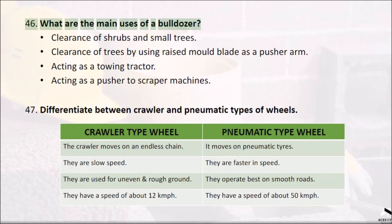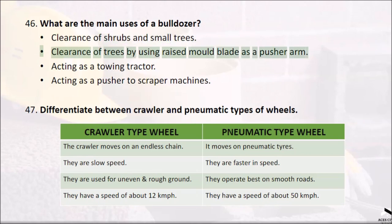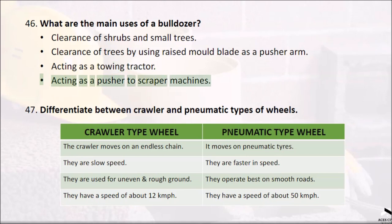Question 46: What are the main uses of a bulldozer? Clearance of shrubs and small trees; clearance of trees by using raised mold blade as a pusher arm; acting as a towing tractor; acting as a pusher to scraper machines.